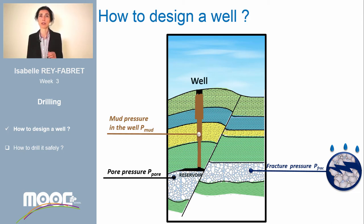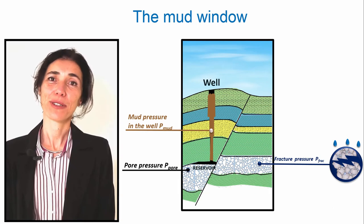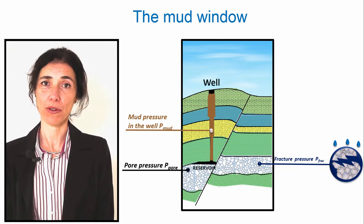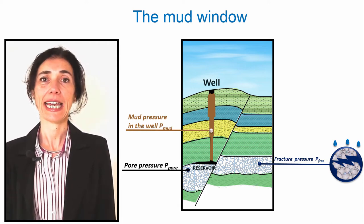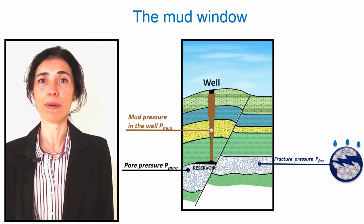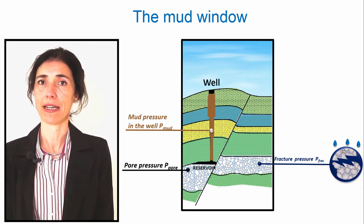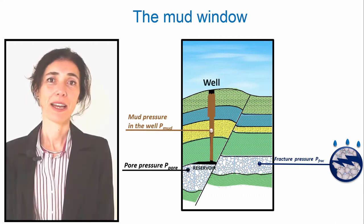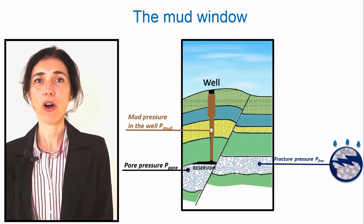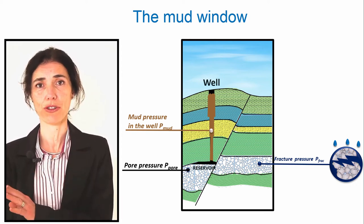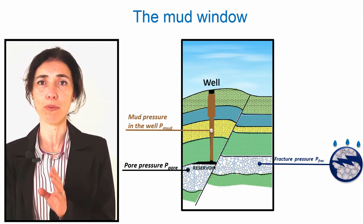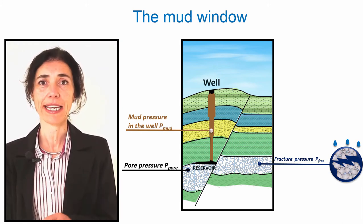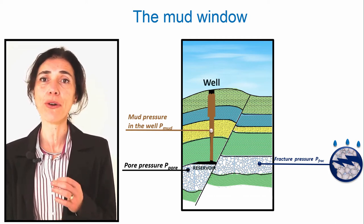One of the roles of the mud is to maintain the interstitial fluid within the rock in order to avoid a kick. During the drilling process, the mud is in contact with the rock which contains the fluid within the grains. In order to maintain this fluid in the formation, the mud pressure has to be higher than the pore pressure. A fluid always flows from high pressure to lower pressure. If the mud pressure is higher than the pore pressure, the formation fluid cannot enter the well. It remains in the formation and there is no risk of blowout.